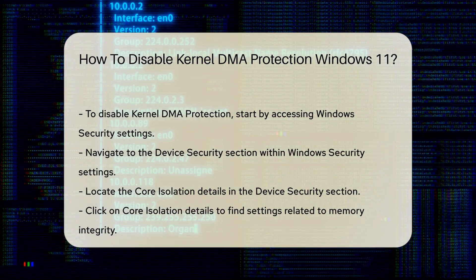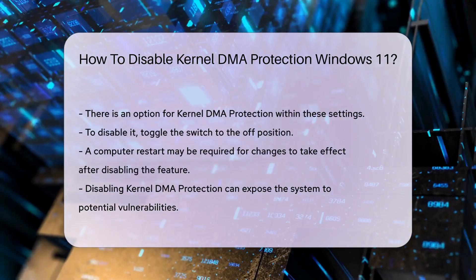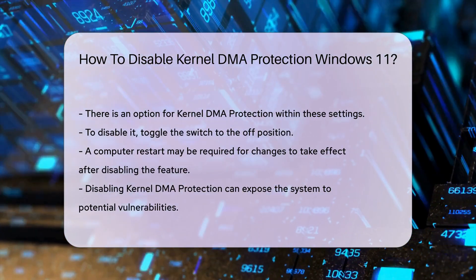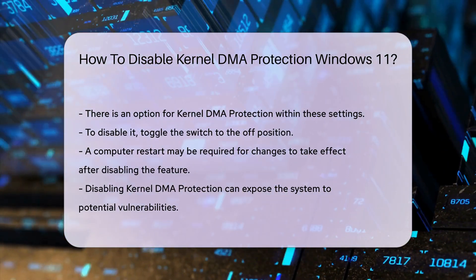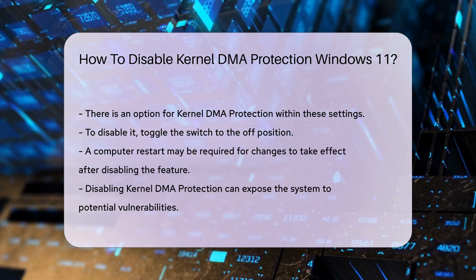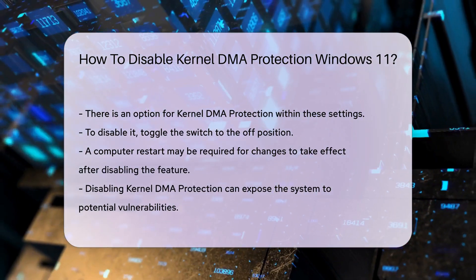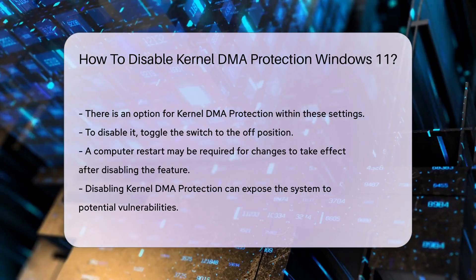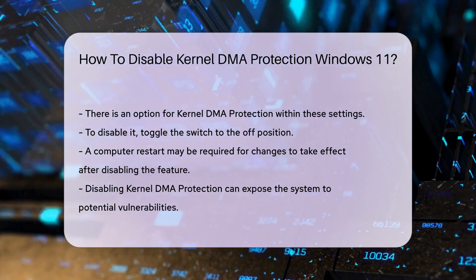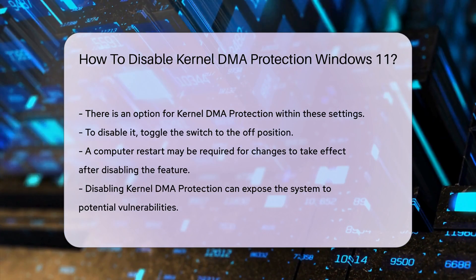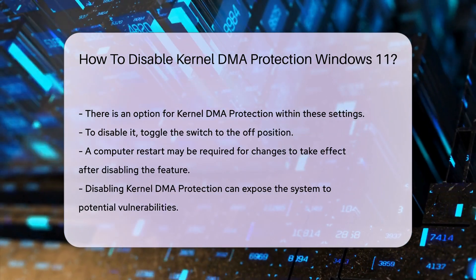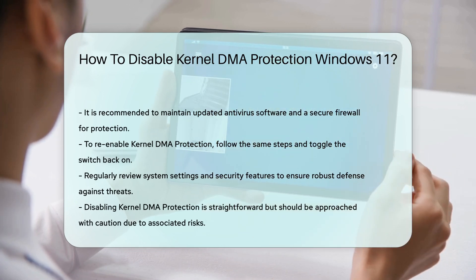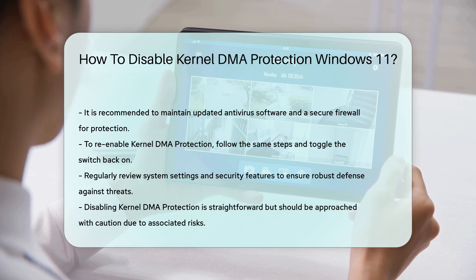After making this change, you may need to restart your computer for the settings to take effect. It is important to note that disabling Kernel DMA Protection may expose your system to potential vulnerabilities. Always ensure that you have adequate security measures in place, such as updated antivirus software and a secure firewall. If you decide to re-enable Kernel DMA Protection later, simply follow the same steps and toggle the switch back on. Regularly review your system settings and security features to maintain a robust defense against threats.